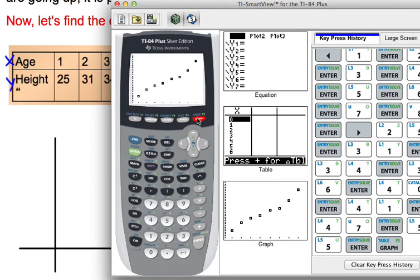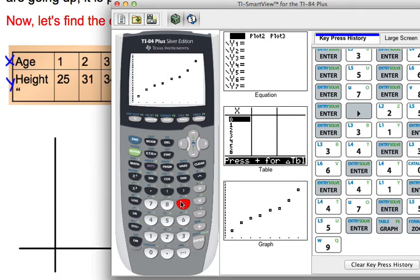If it doesn't show up, then you'd want to do your Zoom 9 stat. Where that is, it is Zoom right under the format, and then push the number 9, and then enter. It'll fit it in there for you.